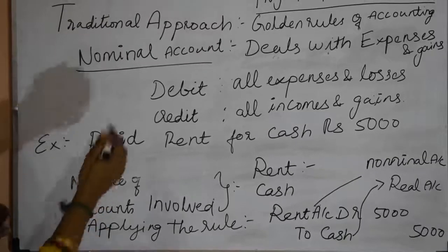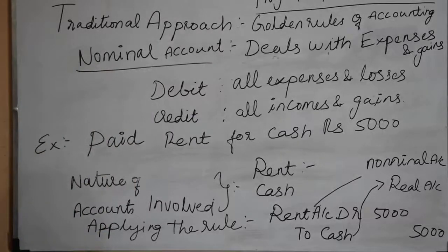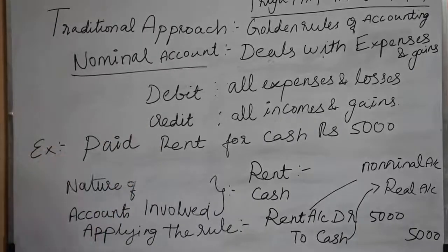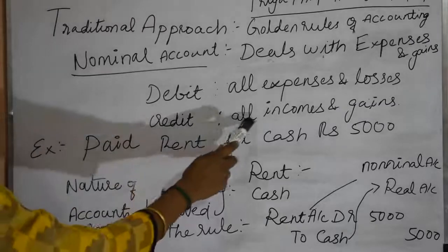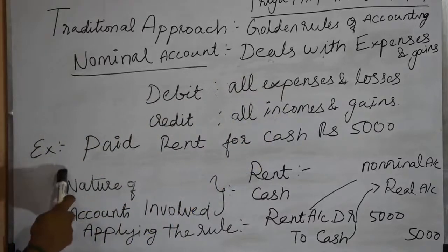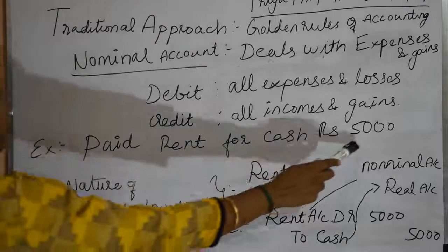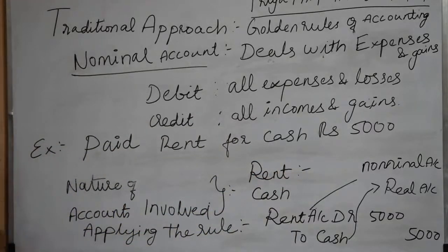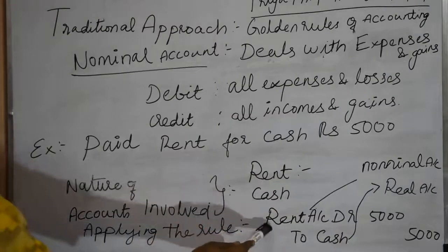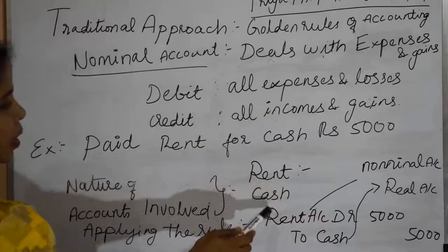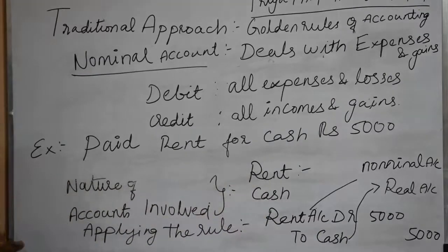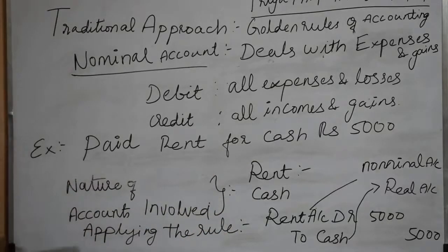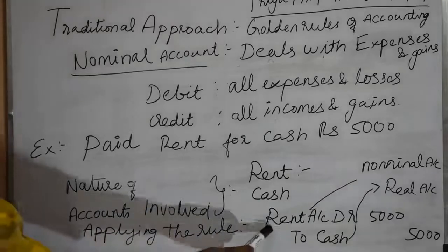Next we are going to see the last rule — the nominal account. Nominal accounts deal with expenses and losses, gains and incomes. The rule is: debit all expenses and losses, credit all incomes and gains. Let's see the example: paid rent in cash 5,000. The accounts involved are the cash account and the rent account. Cash is a real account and rent is a nominal account. Applying the rule: rent account debit to cash.